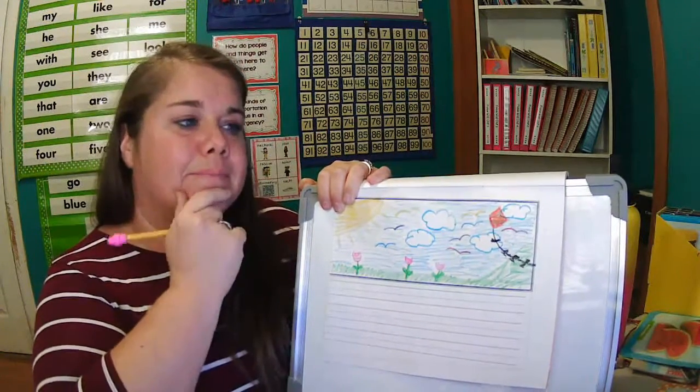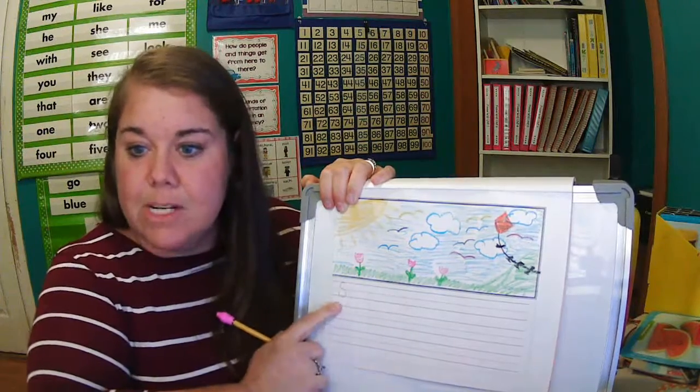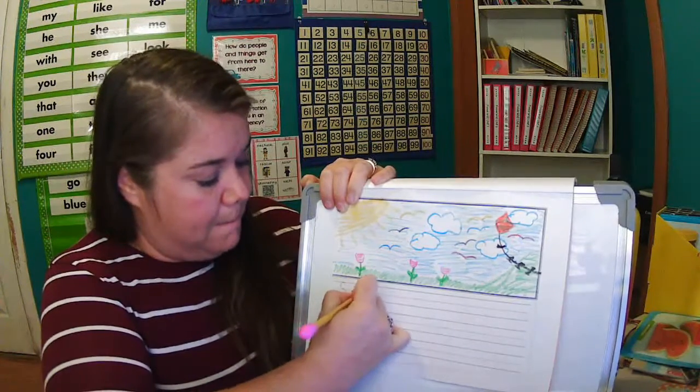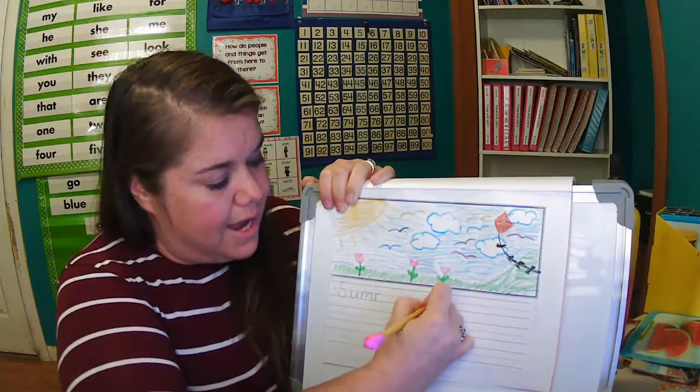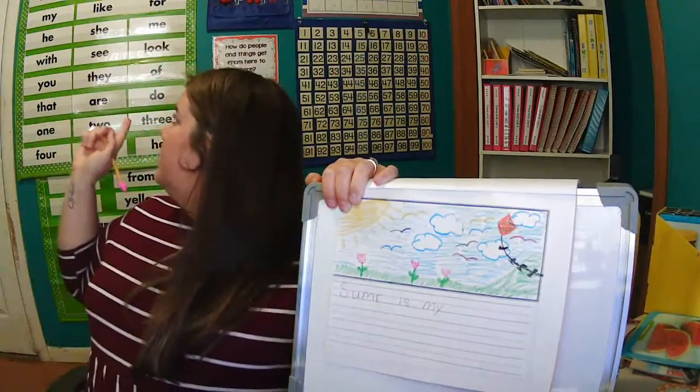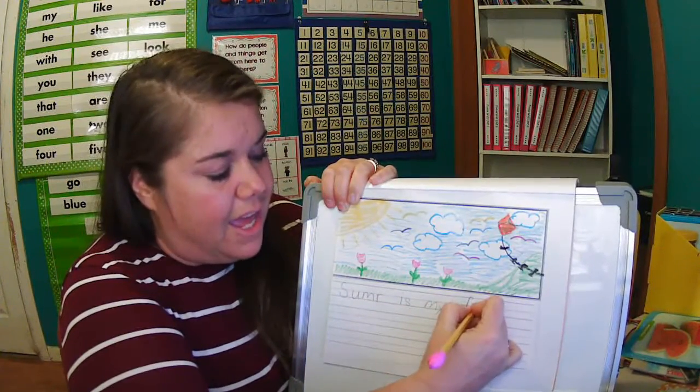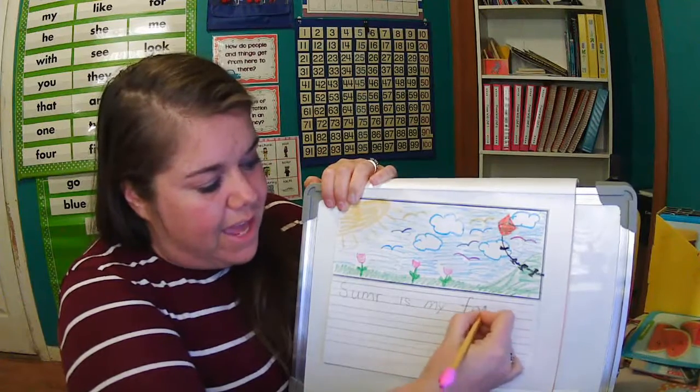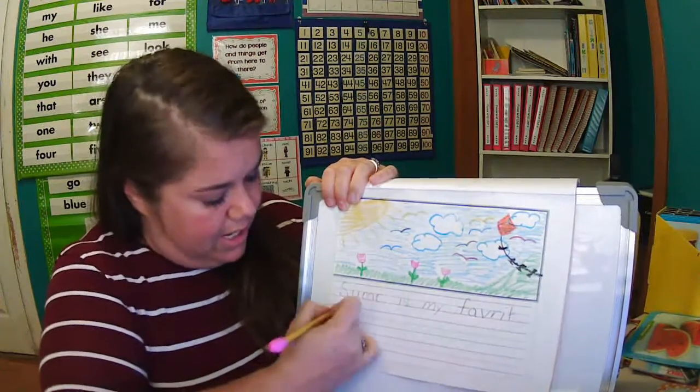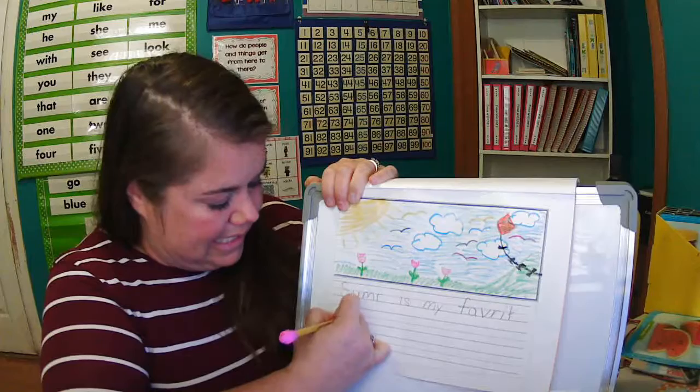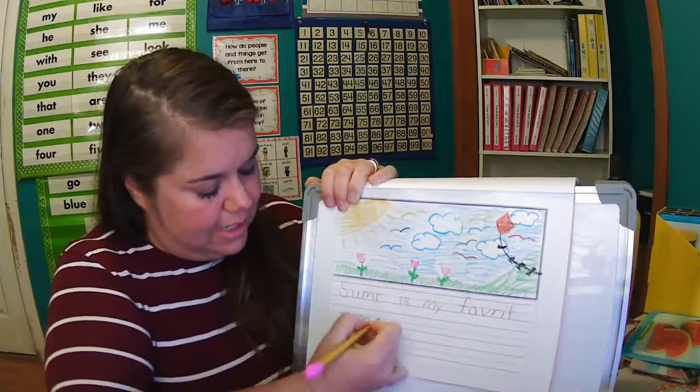So I'm going to say, hmm, summer is my favorite summer. So let's start with summer. Summer is my... Those are both sight words. So if I need to, I can look back at my word wall. Summer is my favorite... Oh, that's a long A sound. Favorite... Summer is my favorite season. Season. Summer is my favorite season. Period.